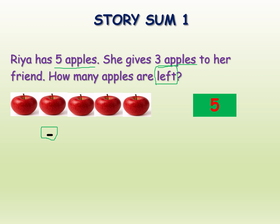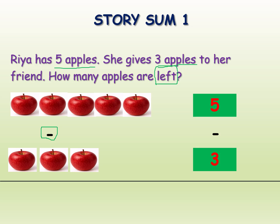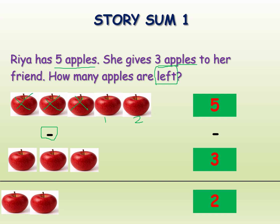How many does she give to her friend? Three apples. Now, what are they asking? How many apples are left? We already given three apples to Rhea's friend, so we cut three apples. Now how many are left? One, two — two apples are left. The final answer: five minus three equals two.